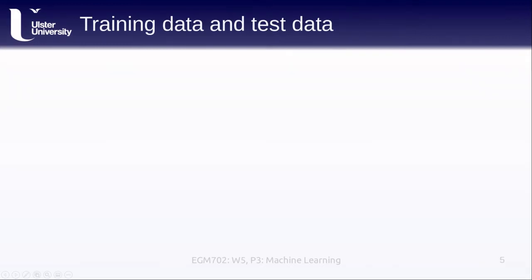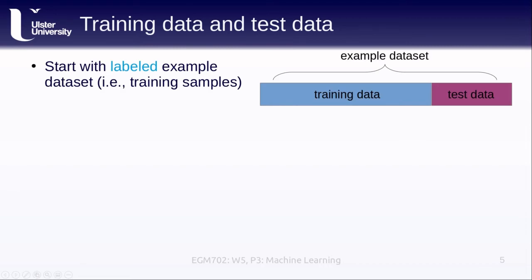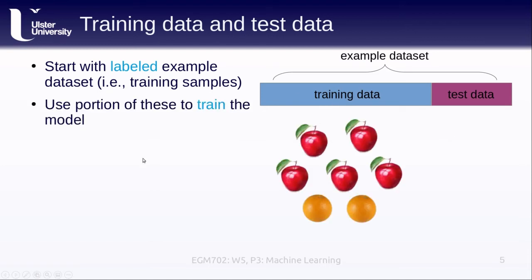In supervised learning we're starting with an example labeled data set, so we have our training samples that we're using to train up our algorithm. We use a portion of this labeled example data set to actually train the model.